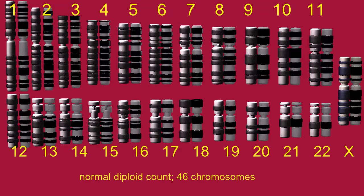A normal human diploid chromosome count is 46, where each of the 23 chromosomes has a homologous pair.